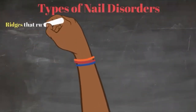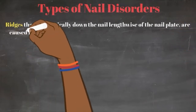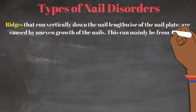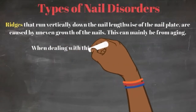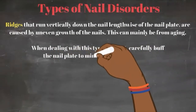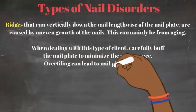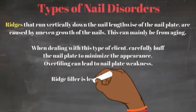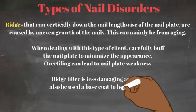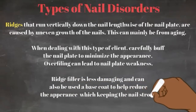Next, we have ridges. Ridges run vertically down the nail lengthwise on the nail plate, and they're caused by uneven growth of the nails, which can mainly be from aging. When dealing with these clients, we want to be careful when buffing the nail plate to minimize the appearance, as overfiling can lead to nail plate weakness. You can also use ridge filler, which is less damaging and can be used as a base coat to help reduce the appearance while keeping the nails strong and healthy.